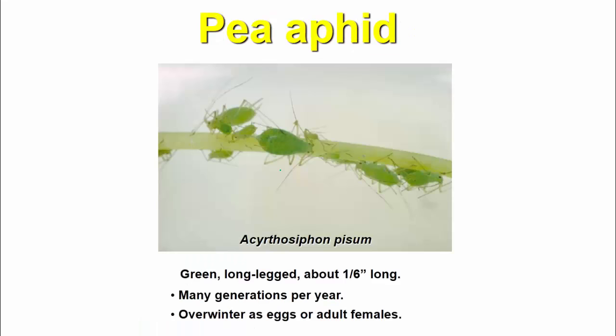Next is the pea aphid. It is green, long-legged, about 1/16 inch (6 to 7 mm) long. It has many generations per year and overwinters as eggs or adults. Both eggs and adults are produced.